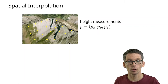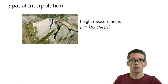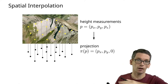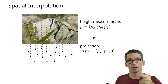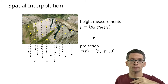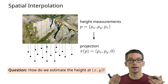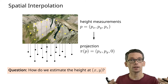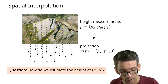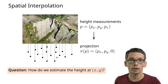So our setting is the following: we have height measurements with x, y, and height. Now we want to construct a surface. The first thing we do is project these points, so now we have points in a plane. Now we want to decide for every point in the plane some height. That's the question spatial interpolation addresses: how do I estimate the height at an arbitrary point x, y? So let's say I am somewhere here — what height do I pick?